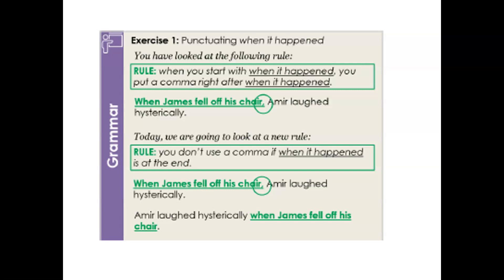Let's have a look at the next task. This time you're going to be punctuating when it happened. Let's recap the rule: when you start with when it happened, you put a comma right after when it happened. Say that rule with me — when you start with when it happened, you put a comma right after when it happened. Good. Now say it on your own. Three, two, one. Brilliant.